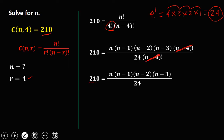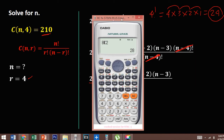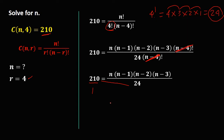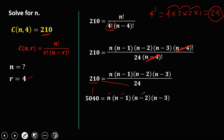Now do cross multiplication. So 210 times 24 equals 5040. Therefore 5040 equals n times (n minus 1) times (n minus 2) times (n minus 3). We need to find four consecutive numbers whose product is 5040.